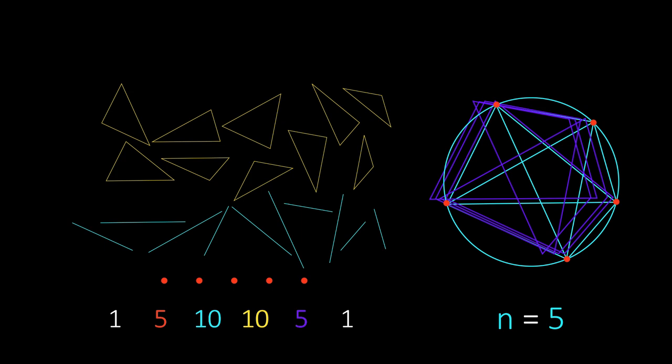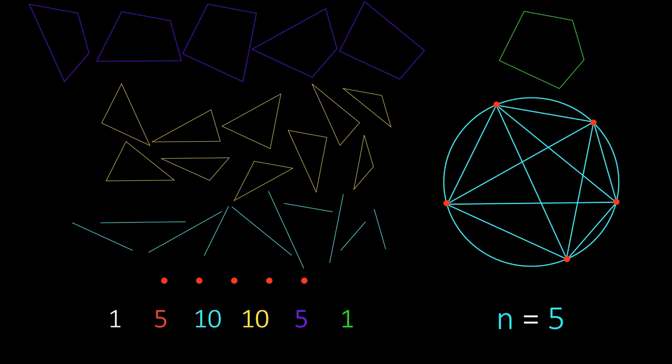The fifth number represents the total number of quadrilaterals, and so on, until you reach the maximum number of sides.